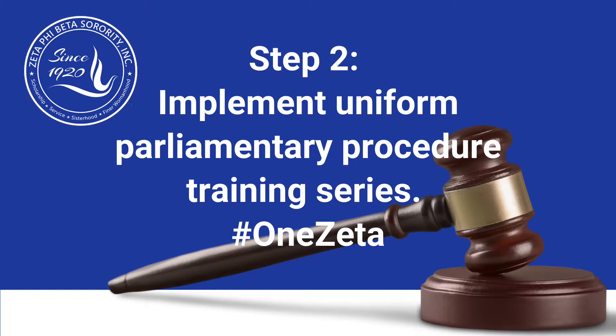Step two: develop a uniform parliamentary procedure training for all members. This training will incorporate an organized approach to be rolled out to the membership and will reaffirm our dedication to our One Zeta pledge.